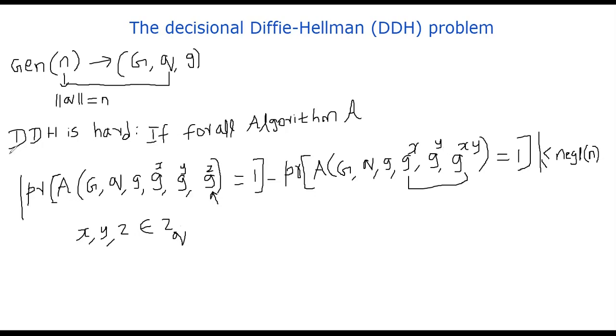So when do we say DDH is hard? We say DDH is hard if for all possible algorithms A, they could not distinguish between g power x, y and a random number g power z with a very negligible probability. So the difference between the probability is negligible in n, meaning if n is very large, this is so small close to zero. That means no algorithm is able to distinguish between whether did you feed in g power x, y or did you feed in g power z. That's basically the idea of the decisional Diffie-Hellman problem.